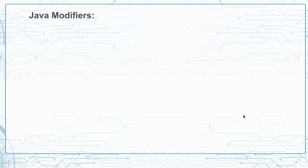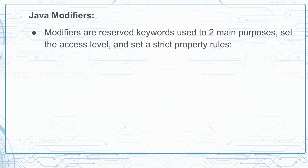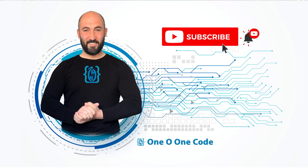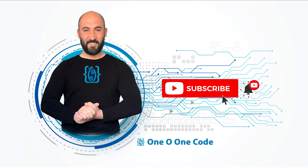Now let's talk about Java modifiers. There are two types: access modifiers, which are reserved keywords to set the access level of a class — this is a more advanced topic and we'll have a separate video for it — and non-access modifiers, which define strict rules for variables, like 'final' if you want a constant variable whose value will never change. That's it for today's video. If you like our videos, don't forget to comment, like, subscribe, and turn on notifications.